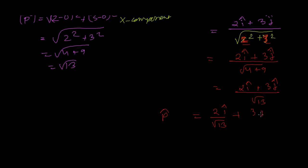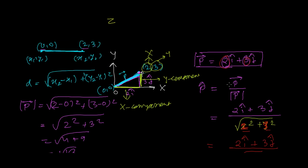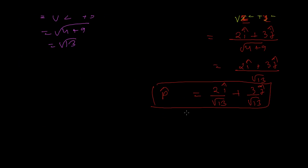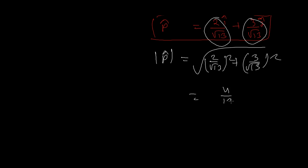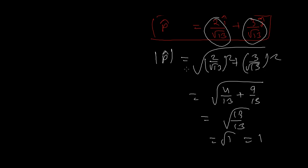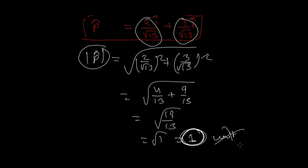So the unit vector of p is (2/√13)i + (3/√13)j. We can verify: the magnitude of this unit vector is √((2/√13)² + (3/√13)²) = √(4/13 + 9/13) = √(13/13) = √1 = 1. This confirms that any unit vector always has magnitude equal to one, and has no units or dimensions.